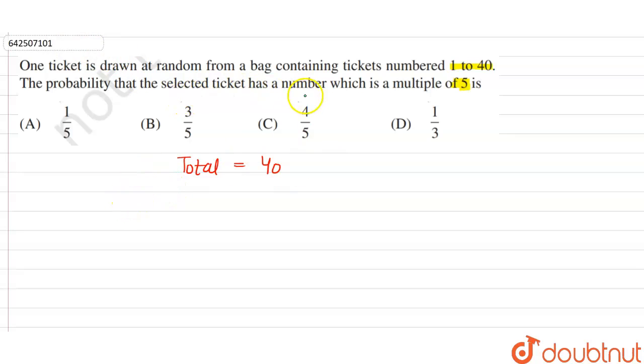Now, the probability we have to find is which is a multiple of 5. So the numbers which are multiples of 5 are: 5, 10, 15, 20, 25, 30, 35 and 40. These are the multiples of 5 till 40.